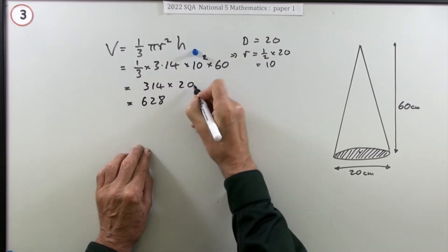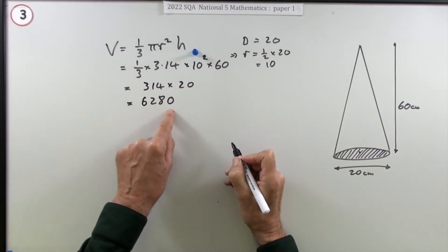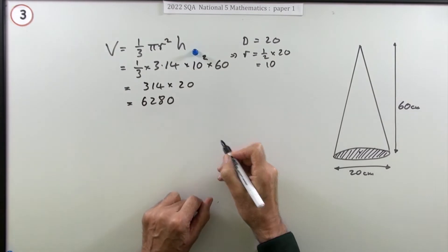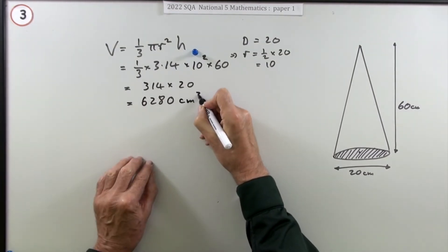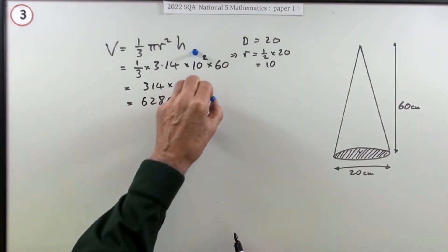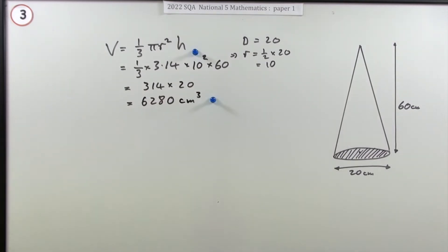That's quite easy because multiplying by 20 just says double it and then multiply it by 10, which really just means put a zero at the end if you've already got a whole number. Now put the units in: centimeters cubed.